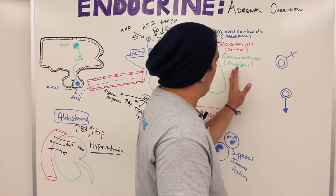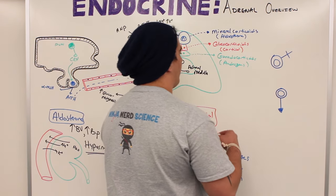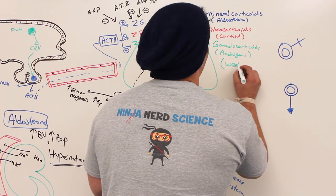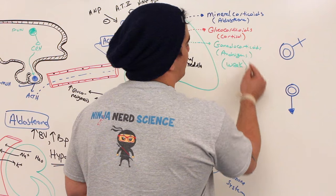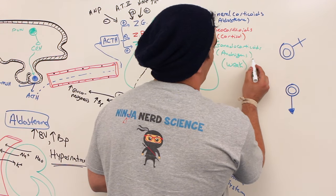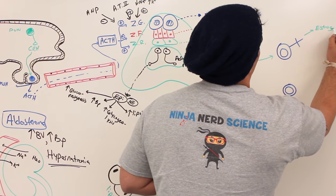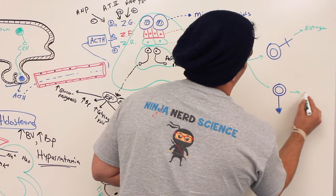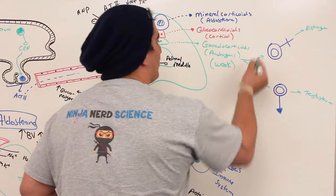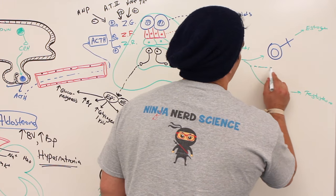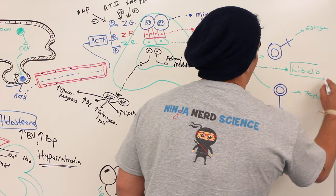The gonadocorticoids are weak androgens and we won't spend much time on them. They can act as precursors: in females they can be used to make estrogen, and in males to make testosterone. Their overall function is primarily to control libido — sex drive.